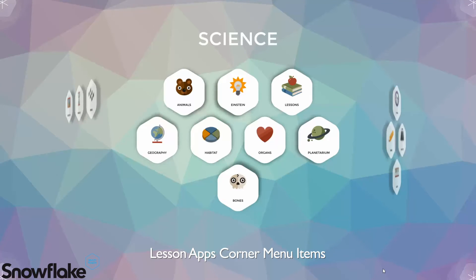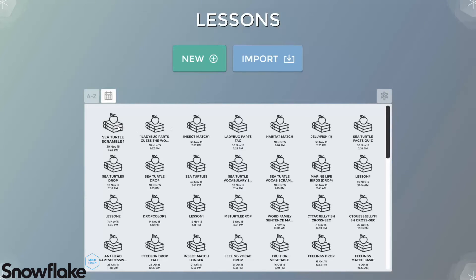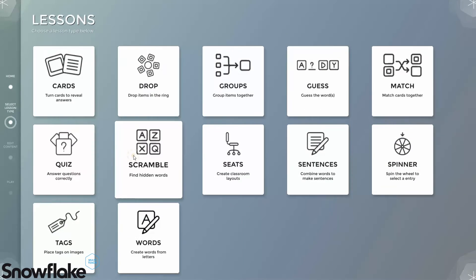The corner menu icons for the various types of lesson apps are similar to the ones found in the main MultiTeach interface. I'll use a scramble lesson as an example.